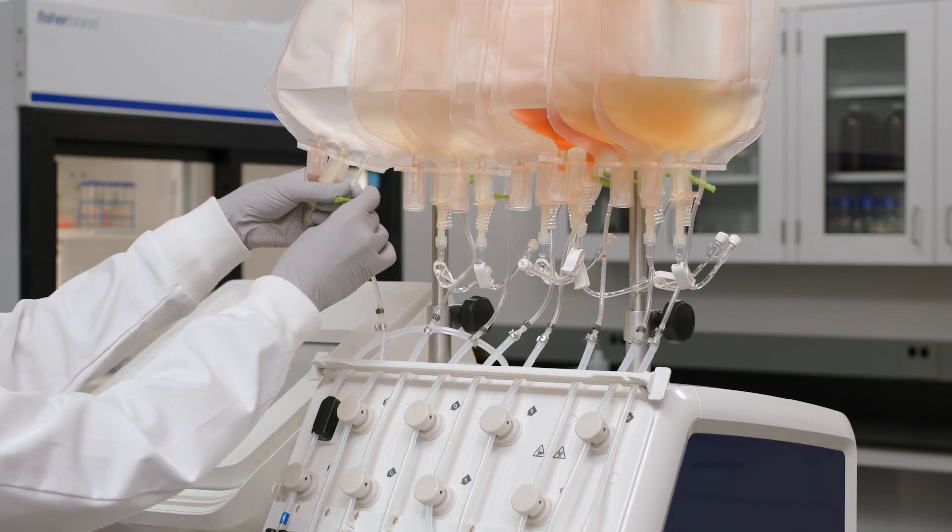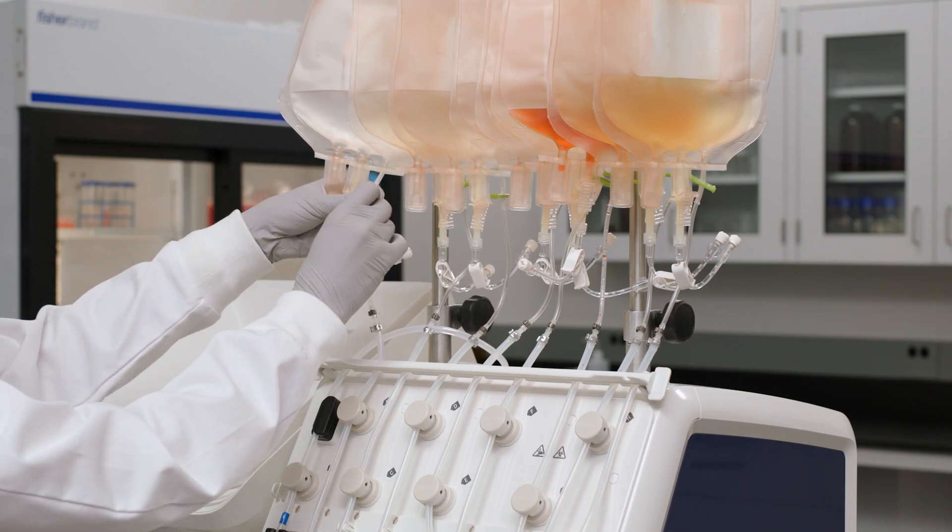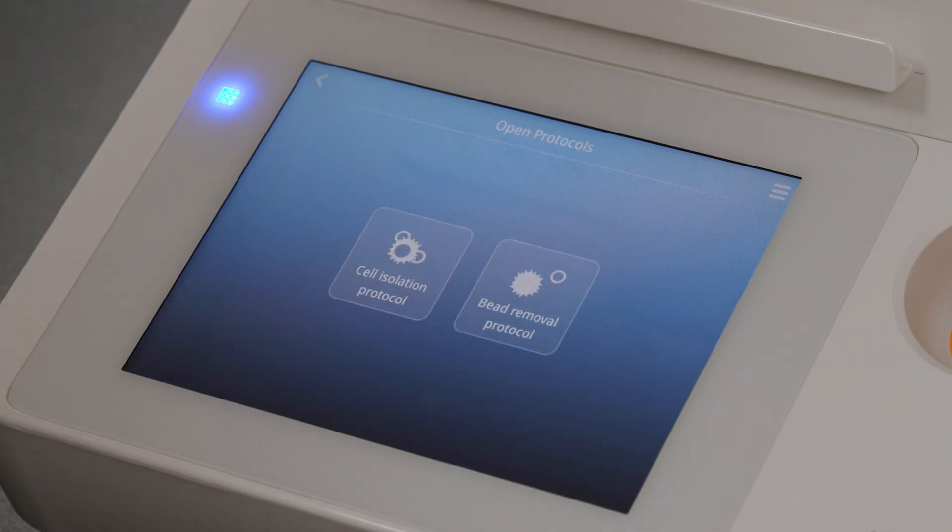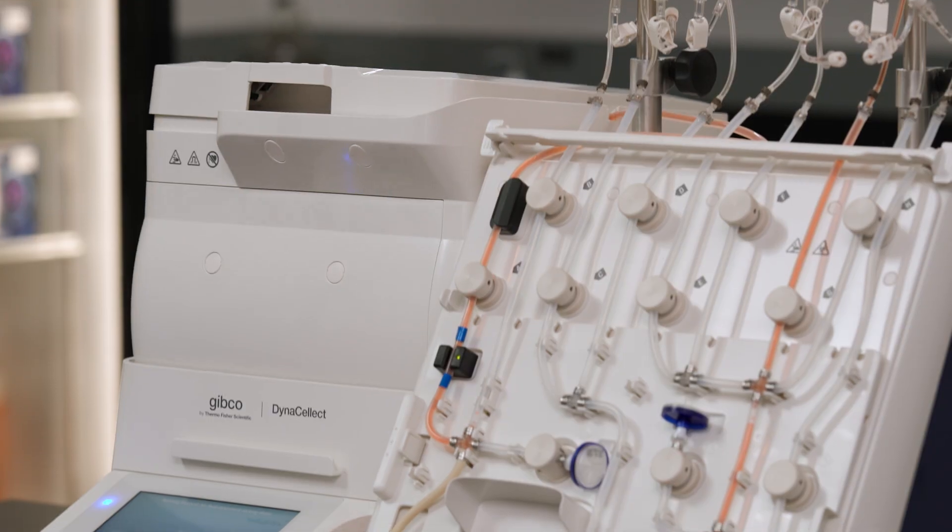Finally, remove or open all clamps in the bags and press on the tubing where the clamp was to ensure there are no kinks in the tubes. Now your DynaSelect system is ready to run.